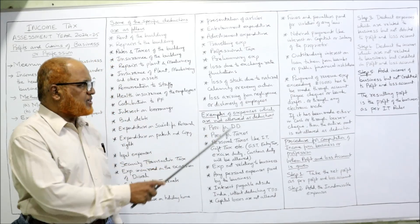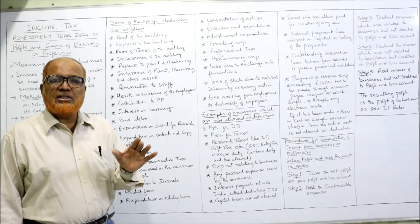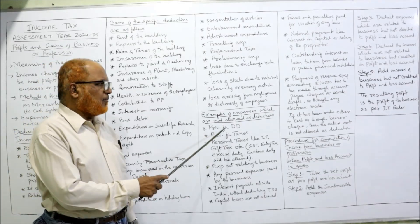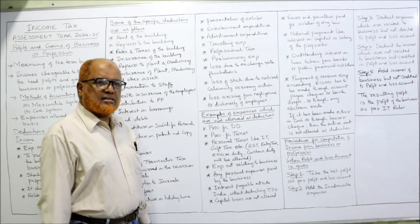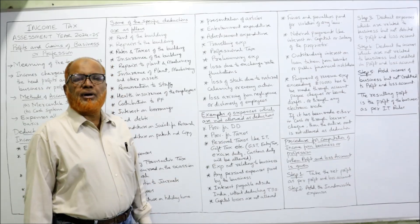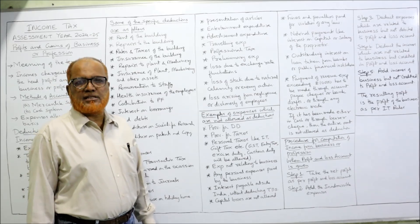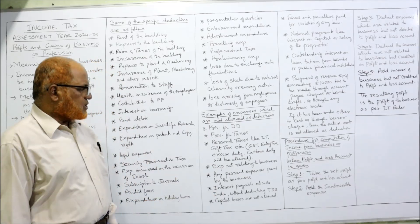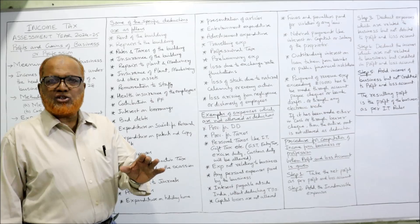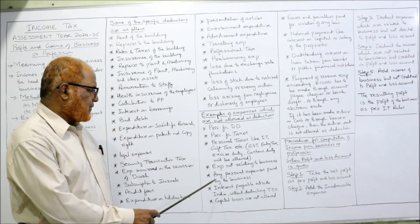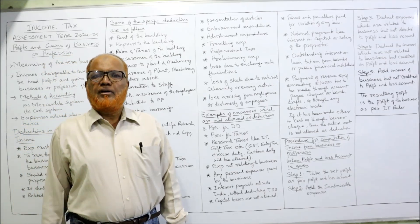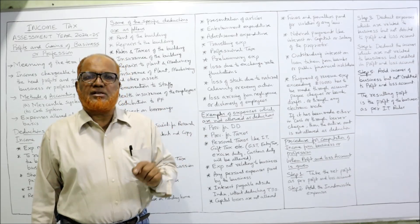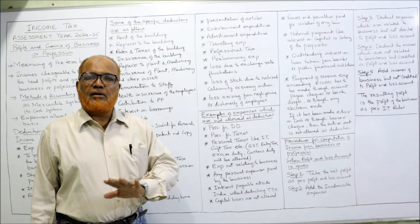Now, examples of expenses which are NOT allowed as deductions: provision for doubtful debts, provision for taxation, and personal taxes like income tax and gift tax are not allowed. However, remember that business taxes are allowed — such as GST, excise duty, entry tax, and customs duty. Expenditure not relating to business — if any expenditure is not related to the business, it is not allowed as a deduction. Any personal expenses paid by the business are not allowed; the business should pay only those expenses which are related to the business.